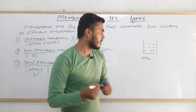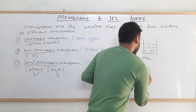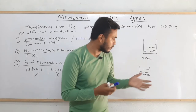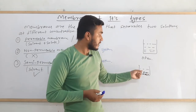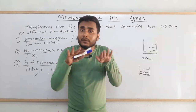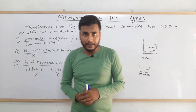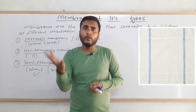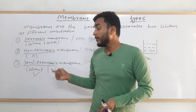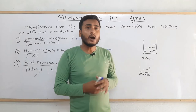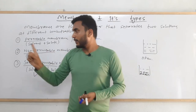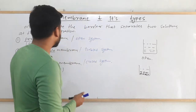Consider a sand and water mixture as an everyday example. If we take a net and pour this mixture on it, everything will pass through — that is like a permeable membrane. If we take a simple normal cloth and pour the mixture over it, the sand will get deposited on top and only water molecules will pass through — that is like a semi-permeable membrane. And if we take a polythene sheet and pour it, nothing will pass through; the sand as well as water will get blocked — that is like a non-permeable membrane.